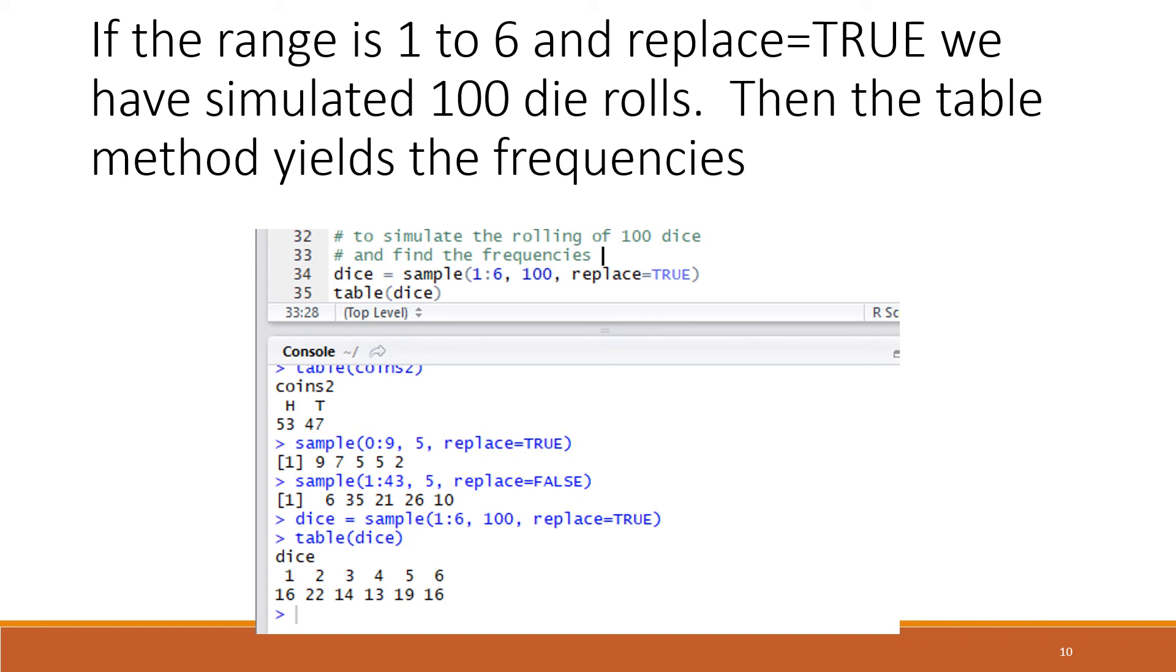In line 35 we're using the table function. The output of sample was assigned to the variable dice in line 34, and then in line 35 we're using the table function which is counting up the frequencies of all the outcomes.